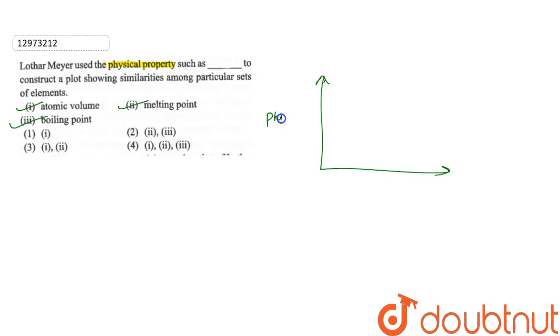Physical property versus atomic weight. Atomic weight. Atomic graph. Atomic volume. Atomic volume.